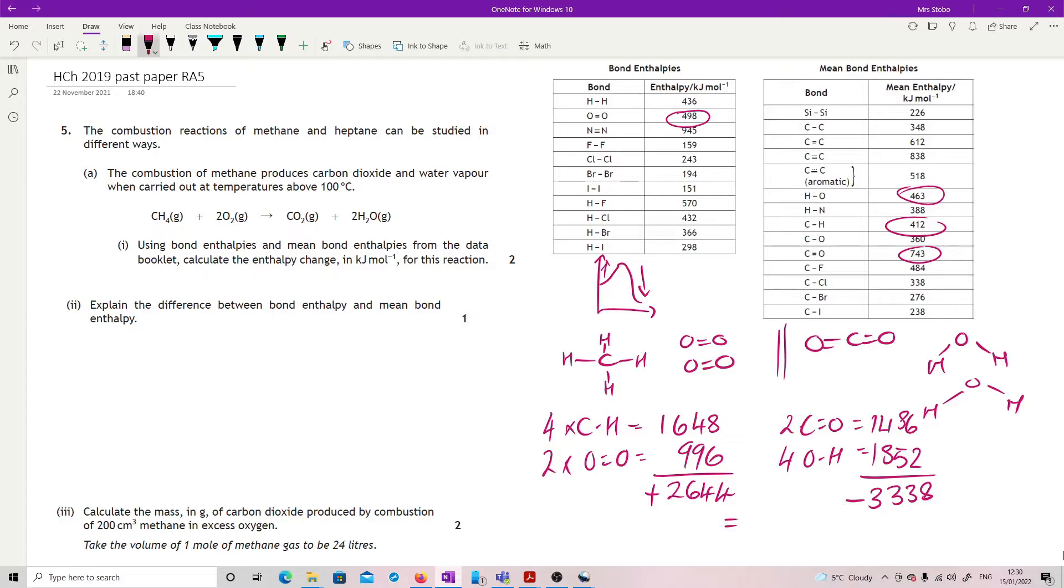Add these two together, gives me a total of minus 694 kilojoules per mole. Per mole. That's it.